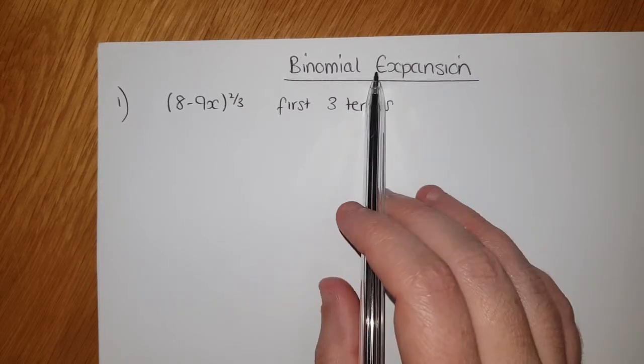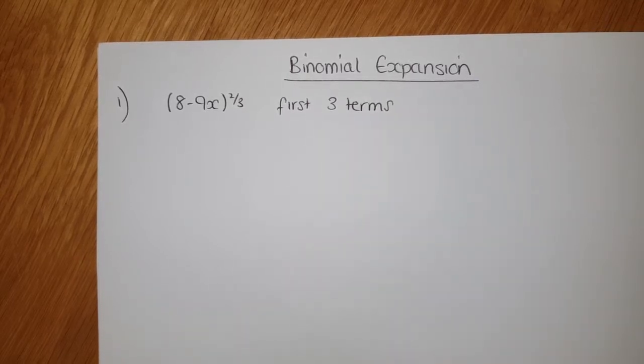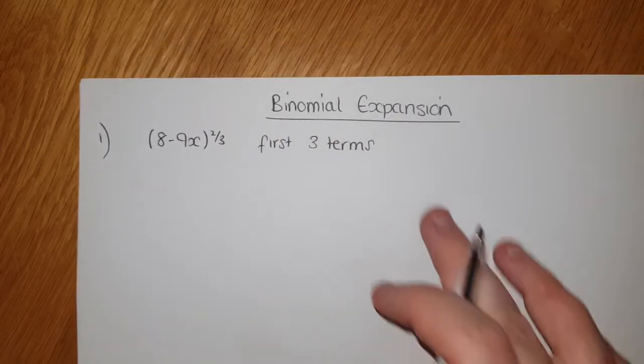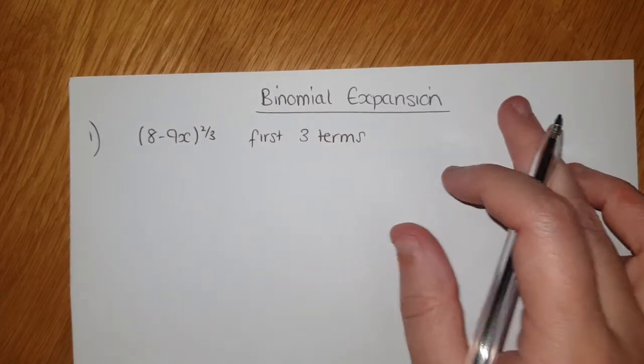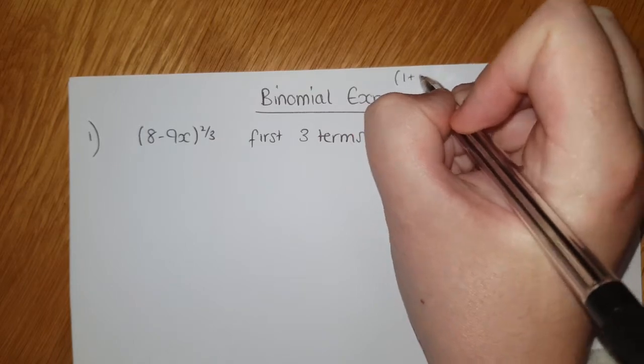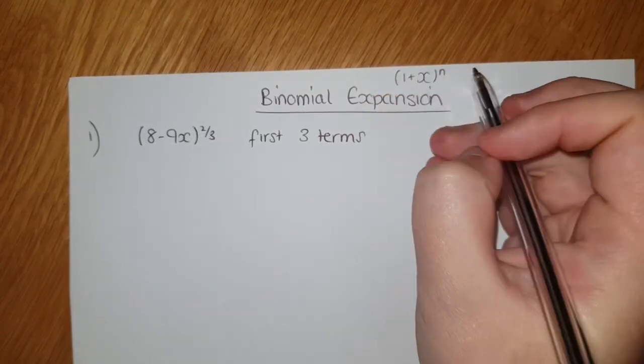Okay, so binomial expansion. First thing, I somehow managed to forget to print this page but never mind. The binomial expansion formula is given in the formula book. Remember that it has to be in the form (1+x)^n.